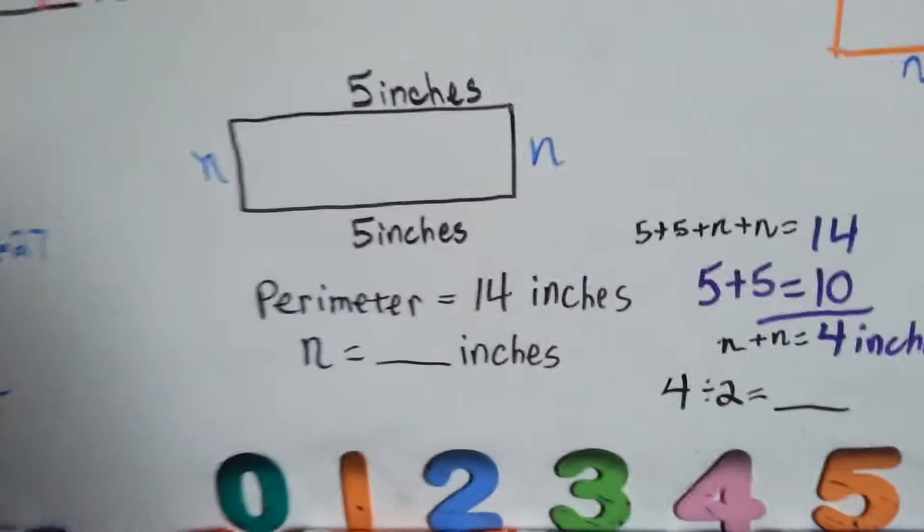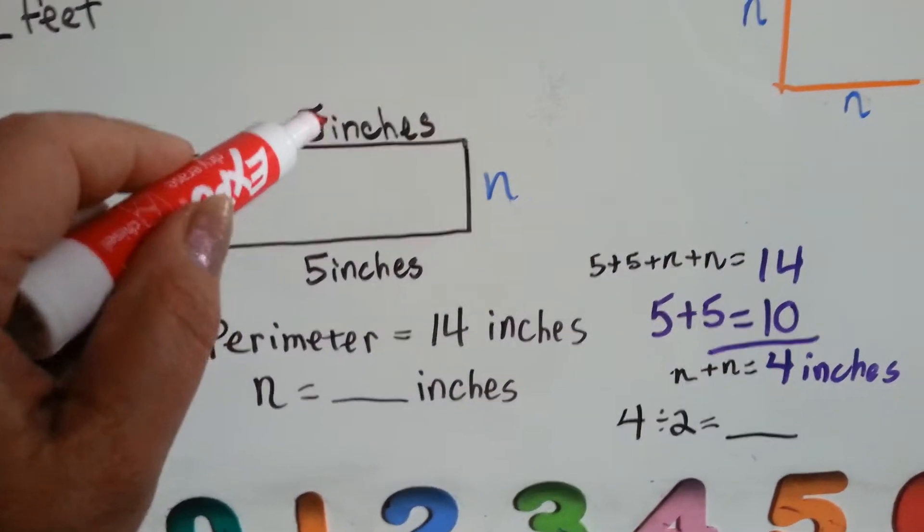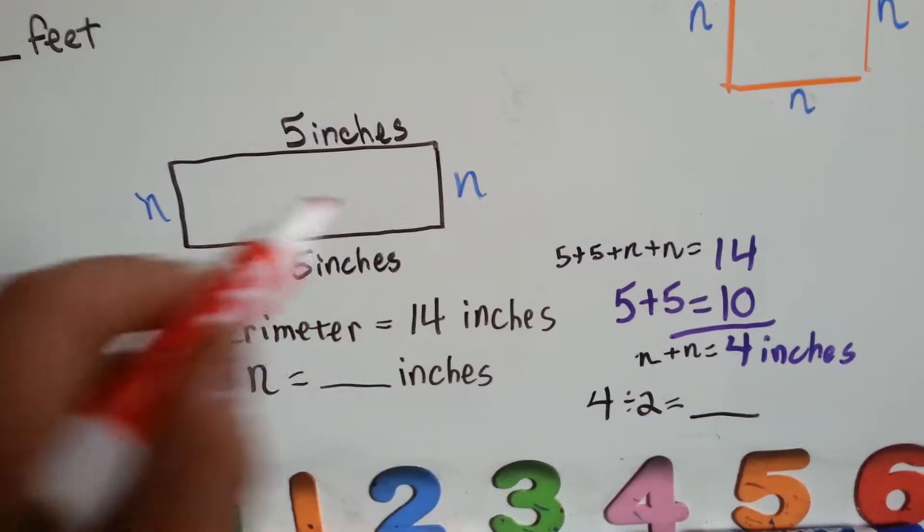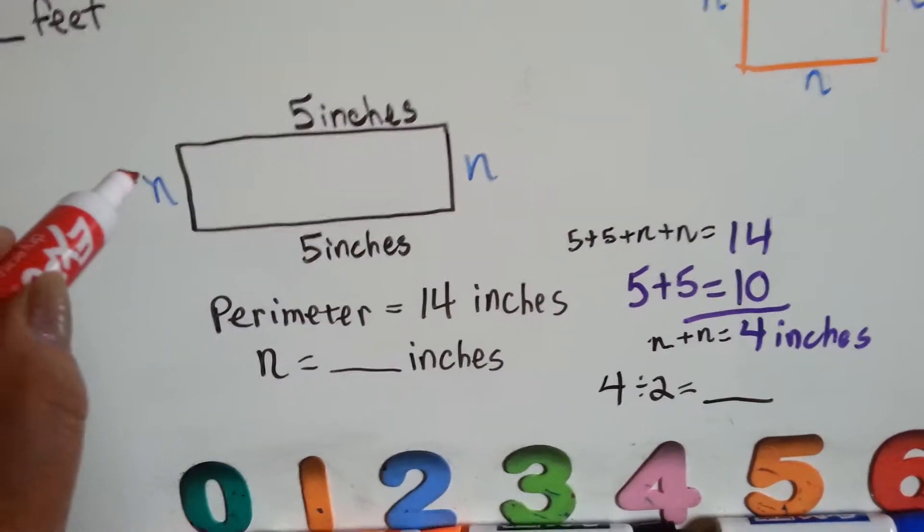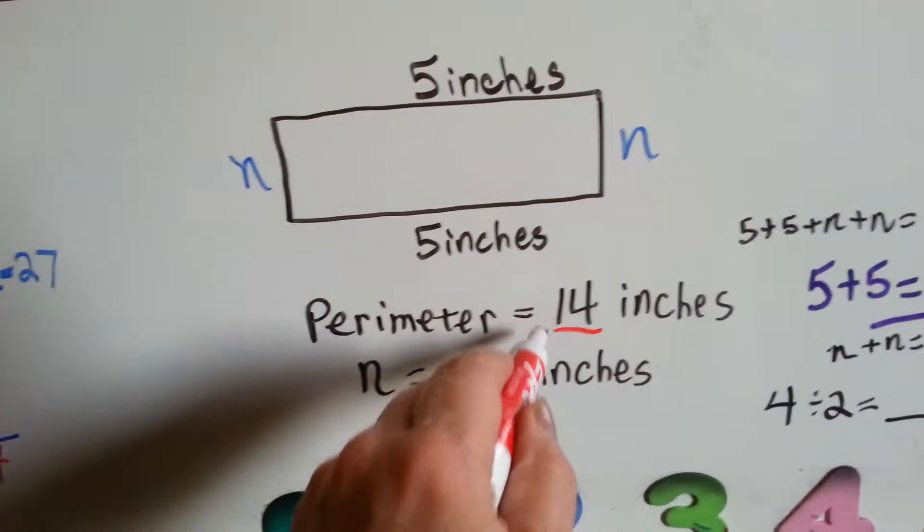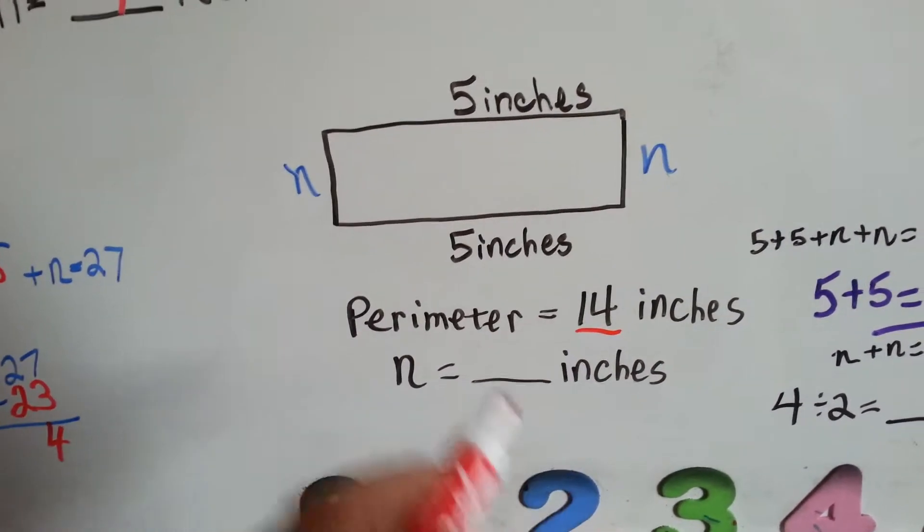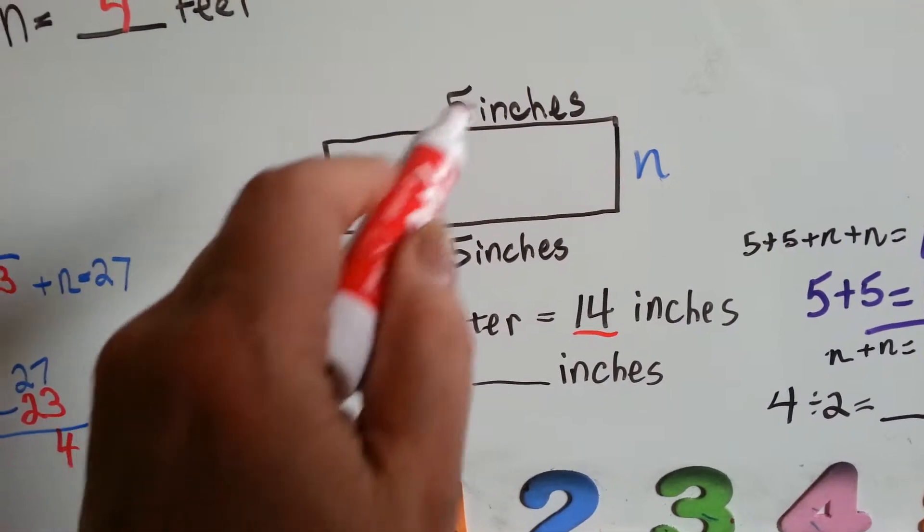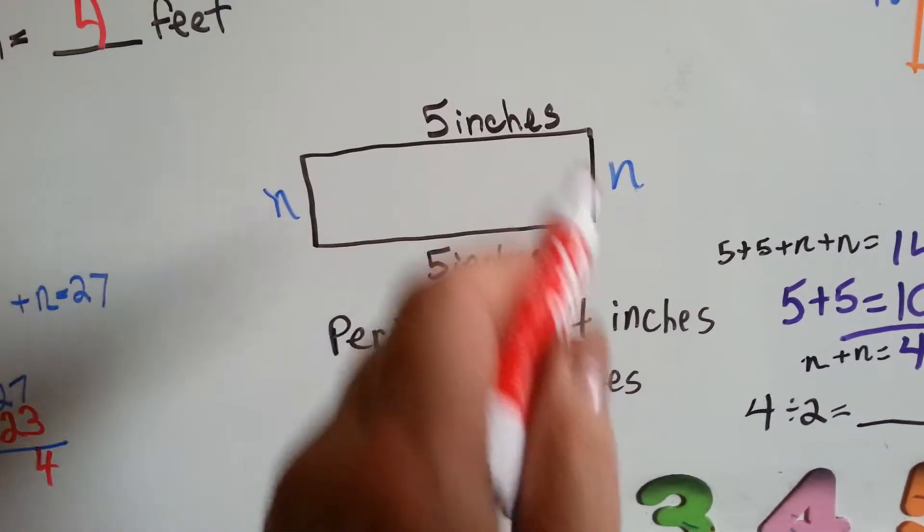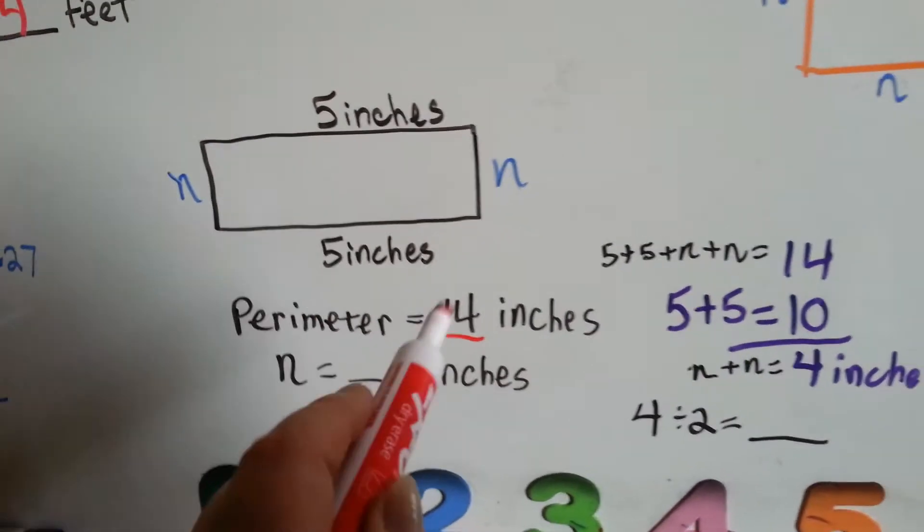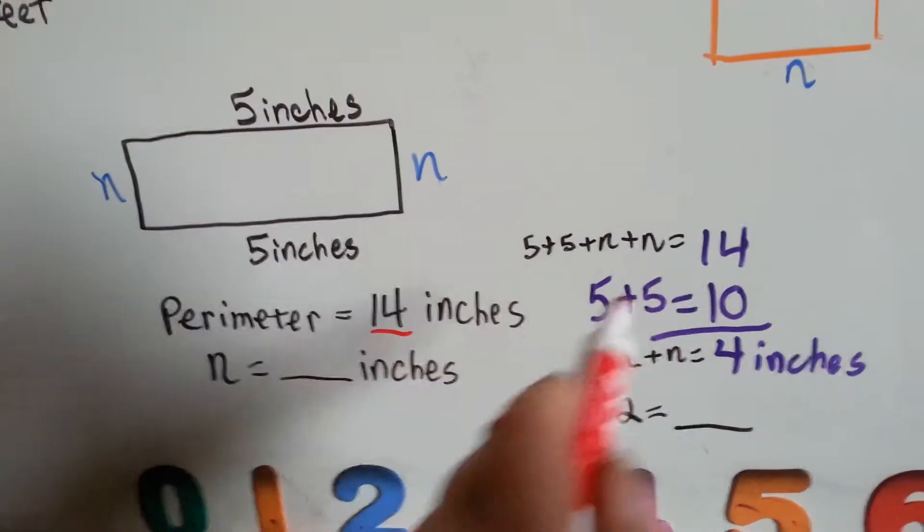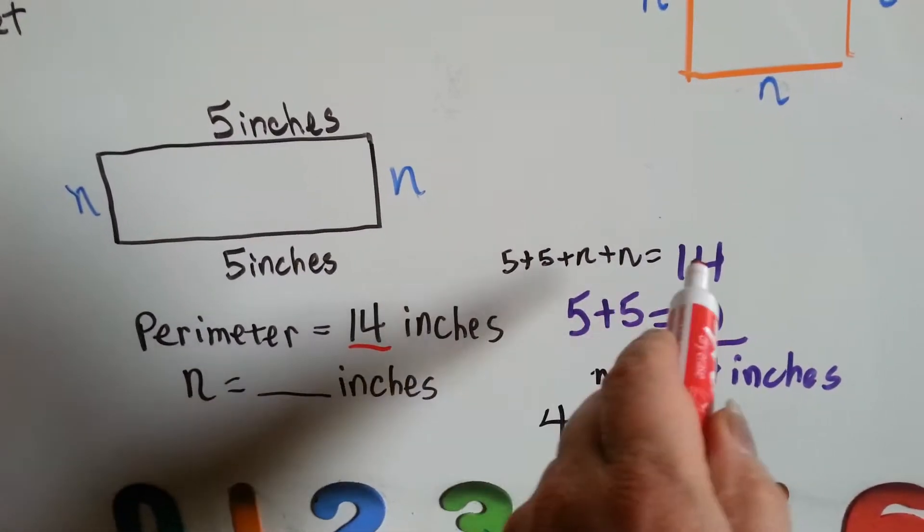Let's look at this one here. This side's 5 inches, this side's 5 inches, and we don't know what these sides are. They're both n. We do know that the whole thing is supposed to equal 14 inches. So we need to figure out what's left over from adding these two together to make these equal 14 altogether. So we know that 5 plus 5 plus n plus n is supposed to equal 14.